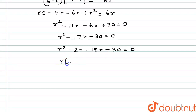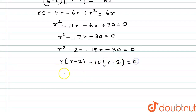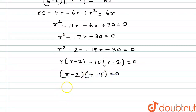Taking r common, we have r minus 2, and then taking 15 common, we have again r minus 2. So we get r minus 2 into r minus 15 equal to 0. This gives us two values of r, that is 2 and 15.